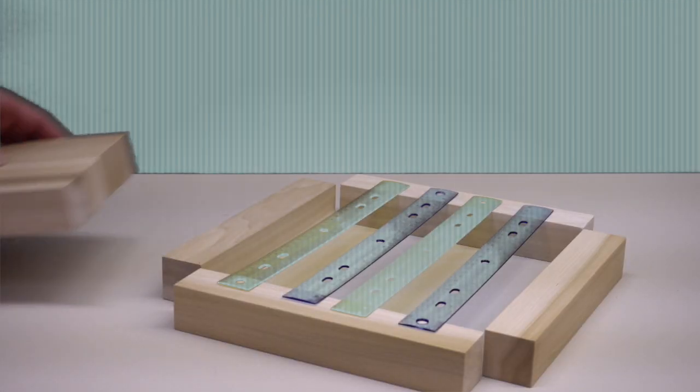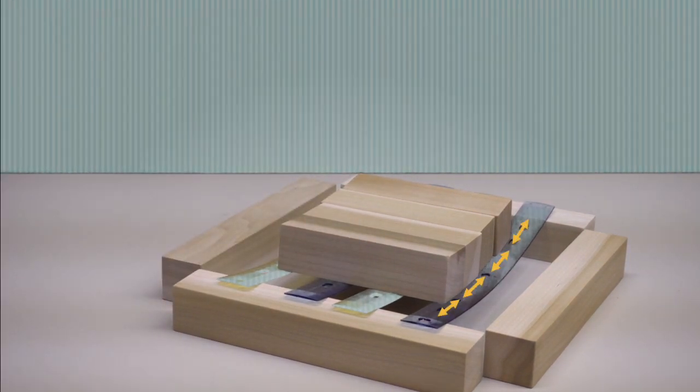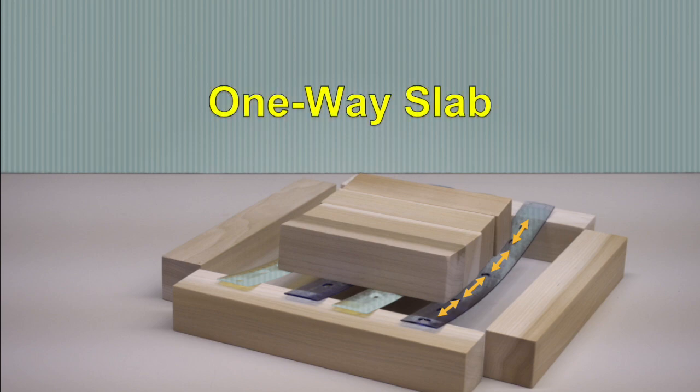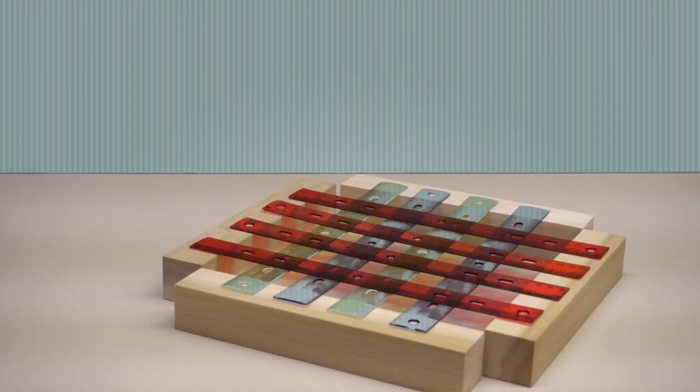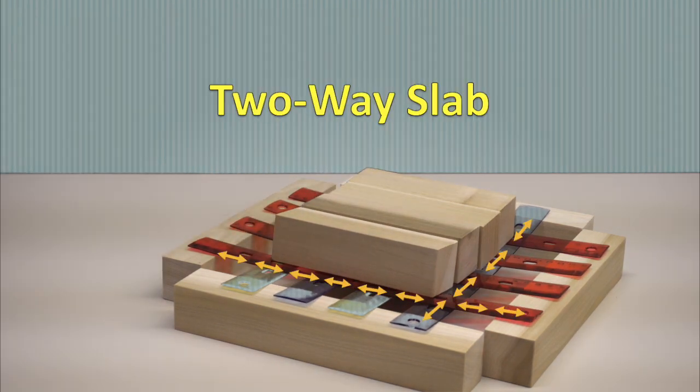If a slab is curved in only one direction, the load must be carried entirely by stresses in that direction, and it is called a one-way slab. If the supports cause the plate to curve in both directions, we have a two-way slab. Carrying of the load is then shared by stresses in the two directions, and deflection is reduced.